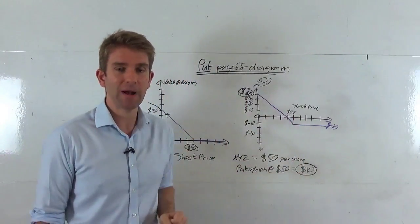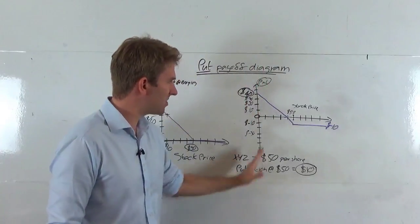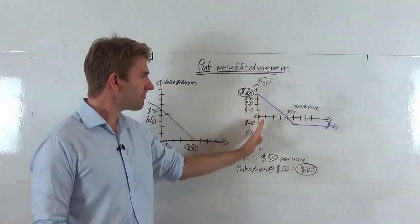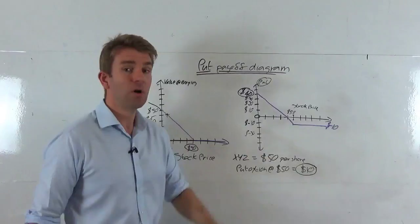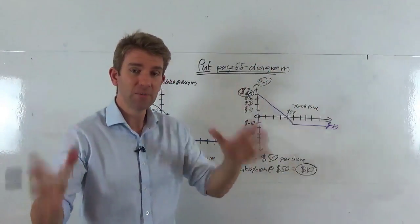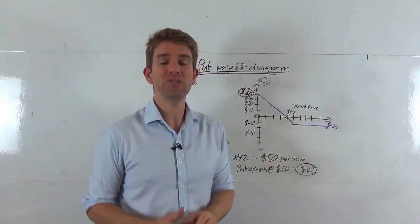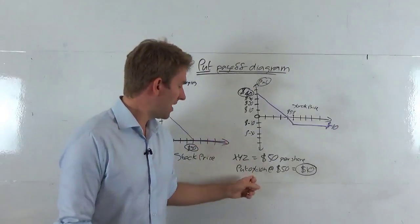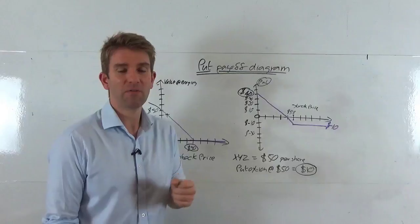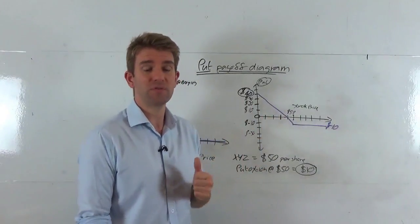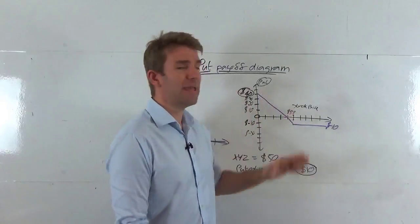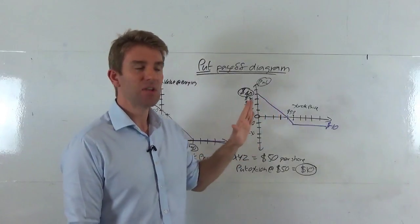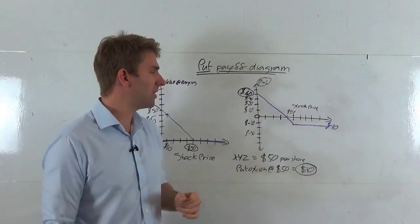Now what about depending on the price we paid for the option — that's what we care about as traders. On the P&L diagram, the y-axis is profit and loss and the x-axis is stock price. If the stock went to zero, we've got the right to sell stock at $50. We exercise that, but don't forget we paid $10 for the privilege of that option. So our P&L is the option value of $50 minus the $10 we paid — that's $40 per option contract.